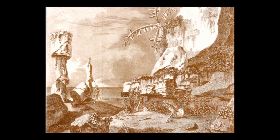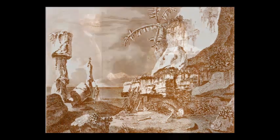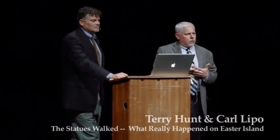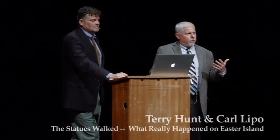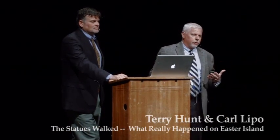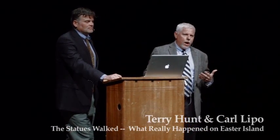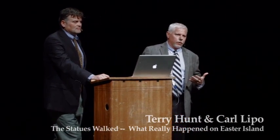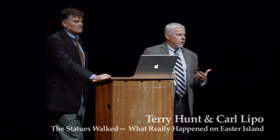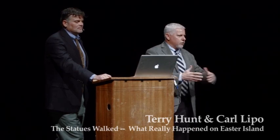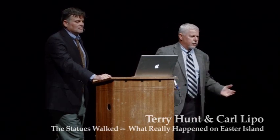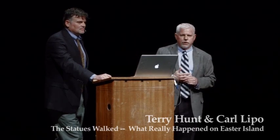In 1774, when Cook is on the island, he writes — and we revisit this slide — he writes about things like: Where are all the people? Where are the children? Where are the women? Why are there skeletons scattered around the surface of the island?